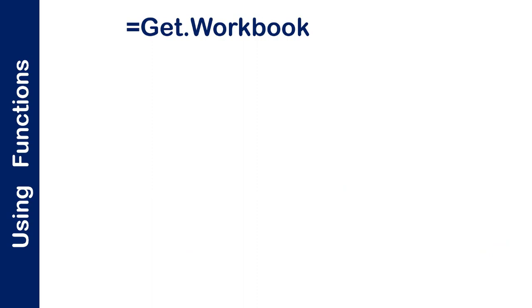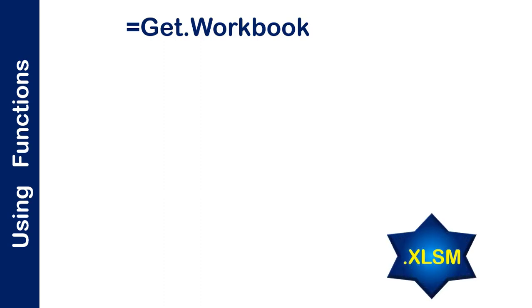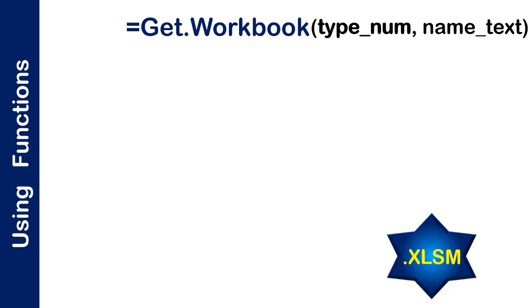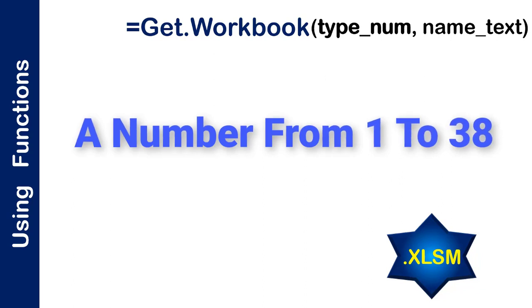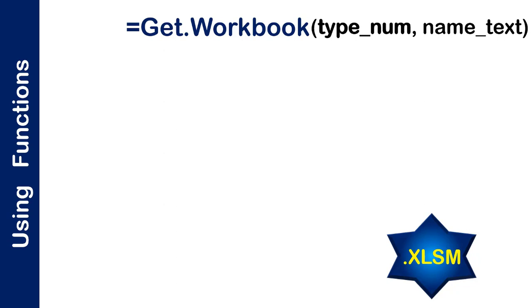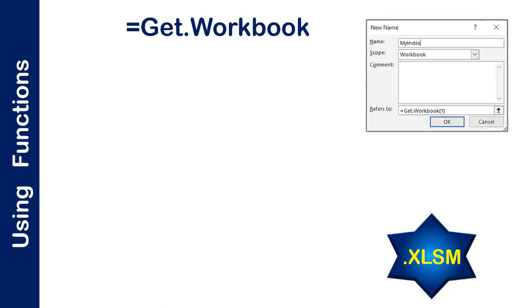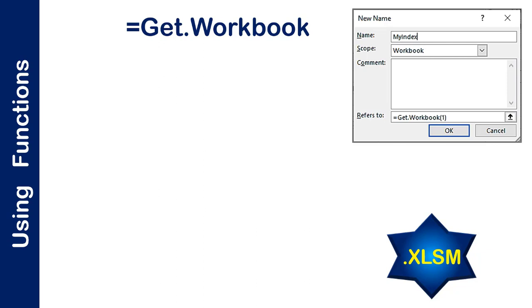The function I'm using is Get.Workbook. It's a macro language function that returns information about a workbook. It requires saving your file in a .xlsm format. The Get.Workbook has two arguments: type number, and name text. The type number is a number that specifies what type of workbook information you want. Name text is the name of an open workbook. If name text is omitted, it is assumed to be the active workbook. Being a macro language function, we cannot use it in the worksheet directly — we use it in a defined name.